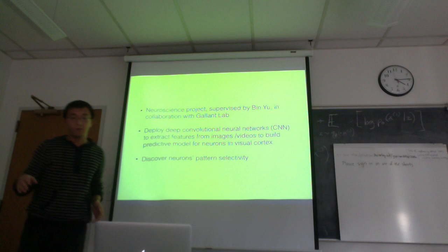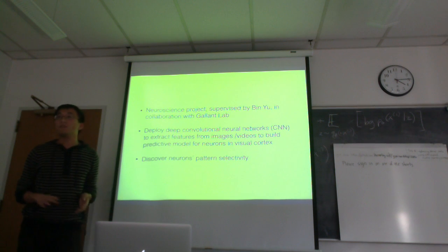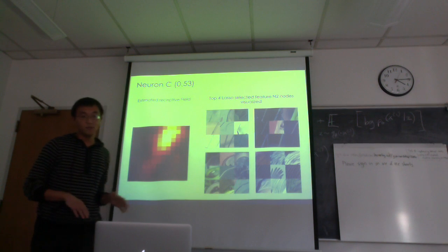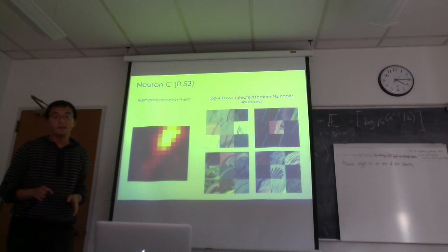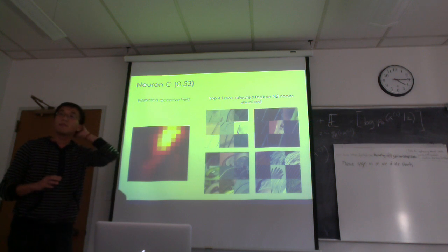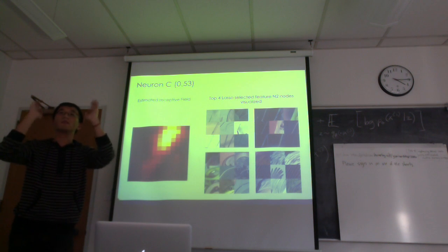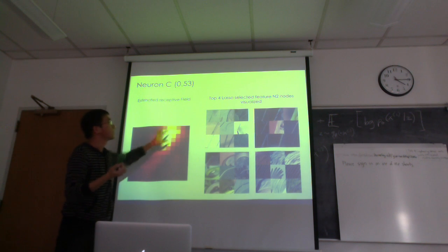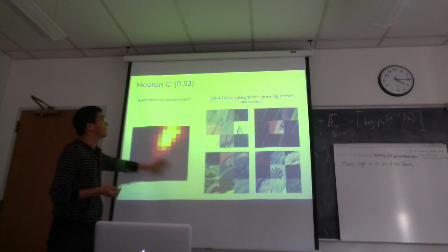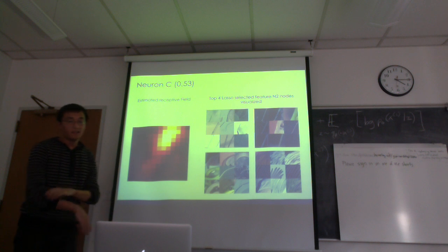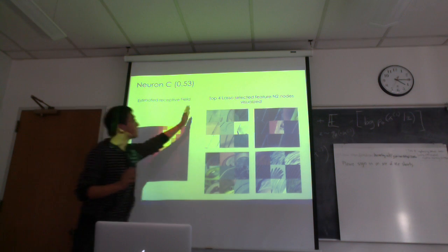Once we have that kind of predictive model, we try to say something about neural activity patterns. Here's one example: once we build the predictive model for a given neuron, we can make statements about it. For instance, a monkey looks at a picture, that neuron activates because there's something at that location, or it responds when something appears at another location — this neuron seems to have tuning for edges in a particular direction.